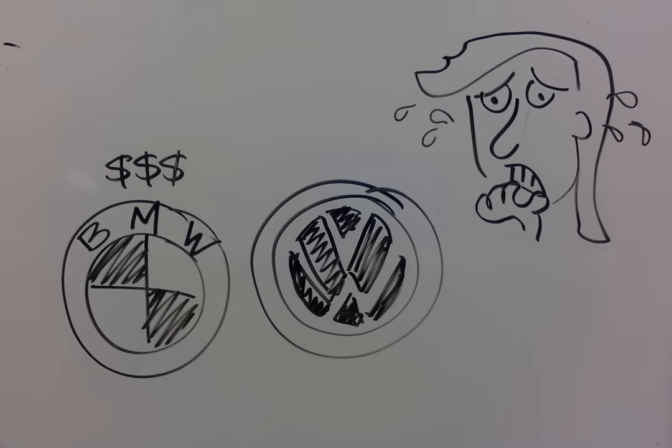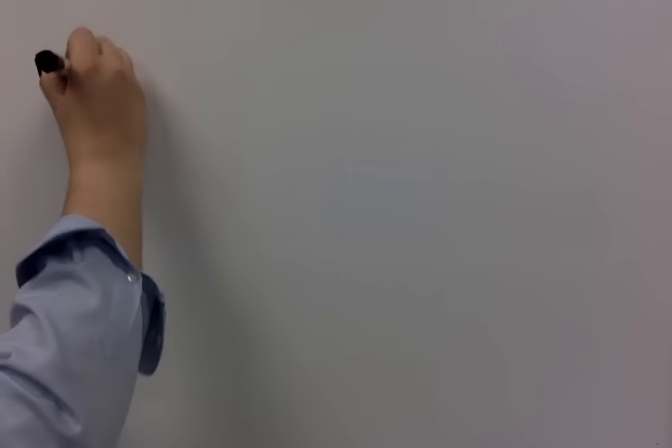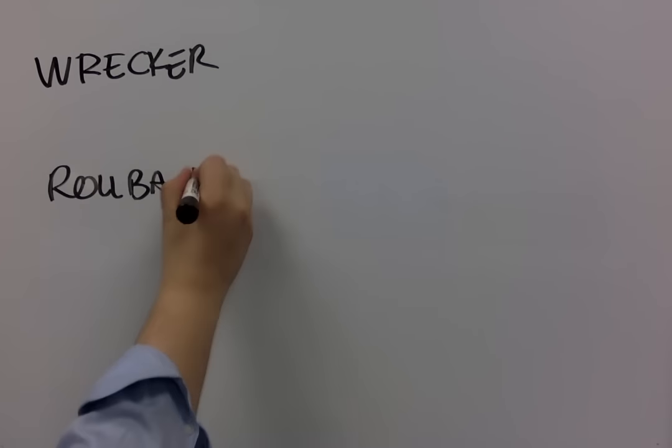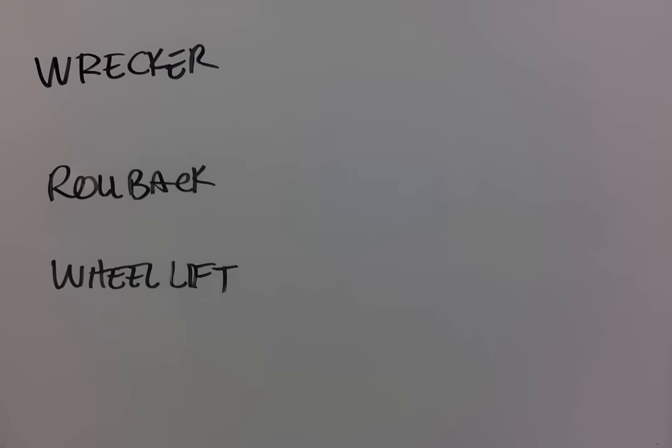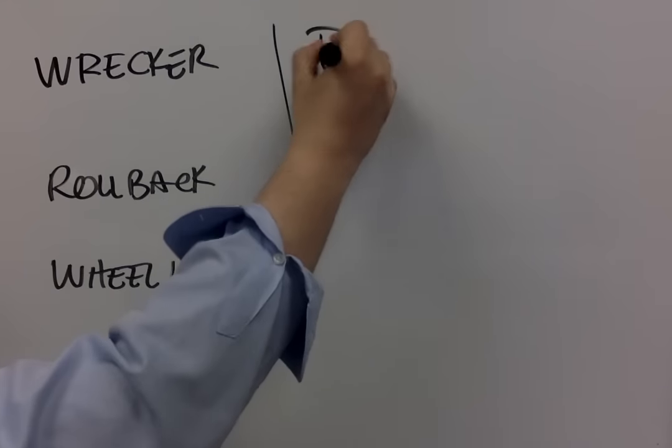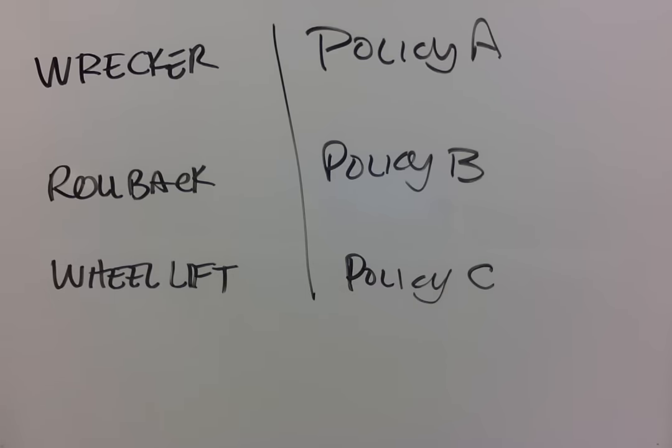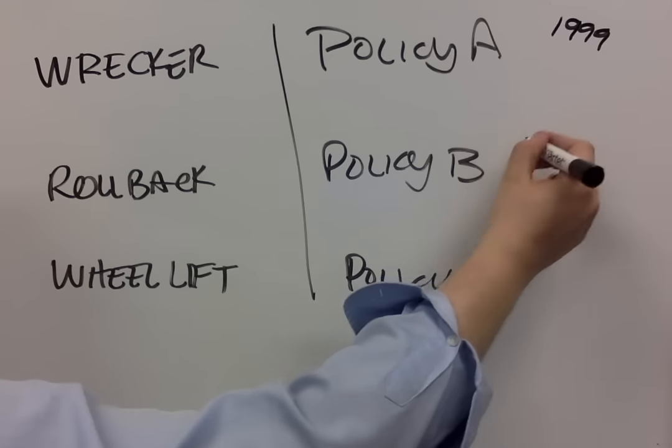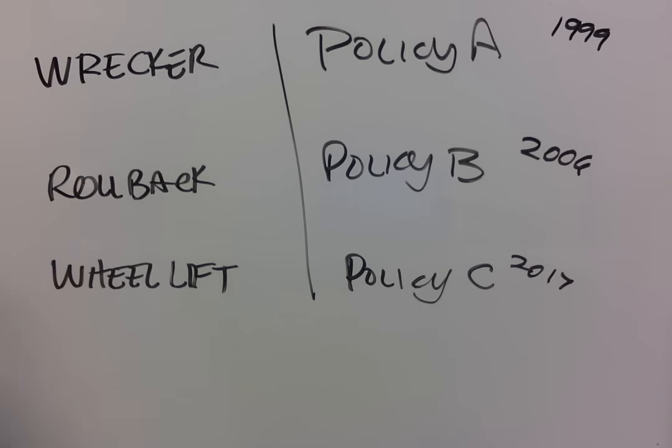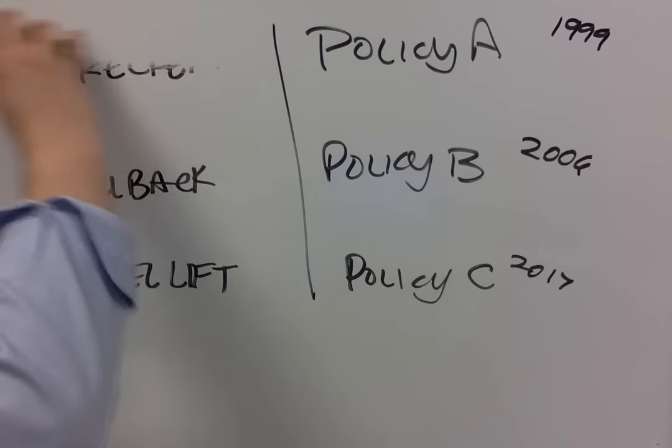The type of tow truck you use can affect your rates too. From wreckers to rollbacks to flatbeds to rotators, wheel lifts, integrated - the whole shebang. Every type of tow truck is different, so every truck needs a different type of insurance. This includes the year, make, model, and cost of your trucks, as well as your tow truck size.